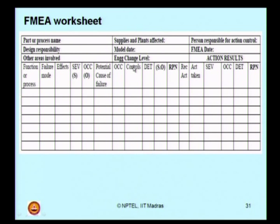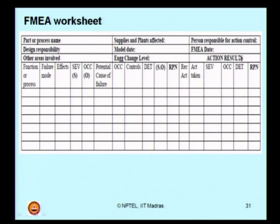What is the ranking of controls you have? Can you detect that failure mode in advance? Then also try to give what we call a risk priority number. Based on this occurrence, controls, and detections, try to recommend some actions and remark the actions taken on these issues.